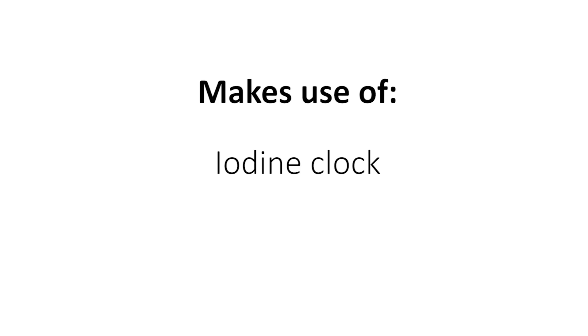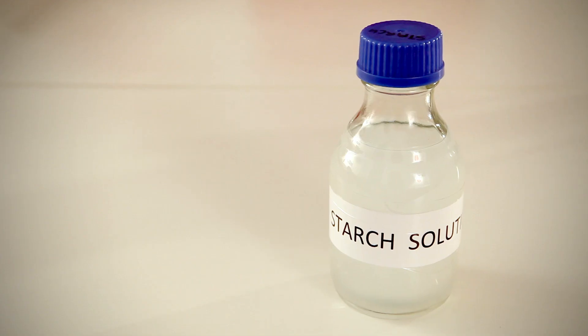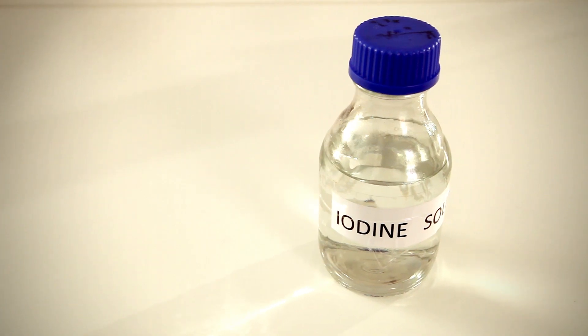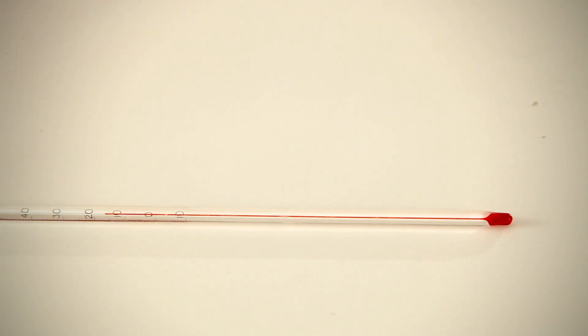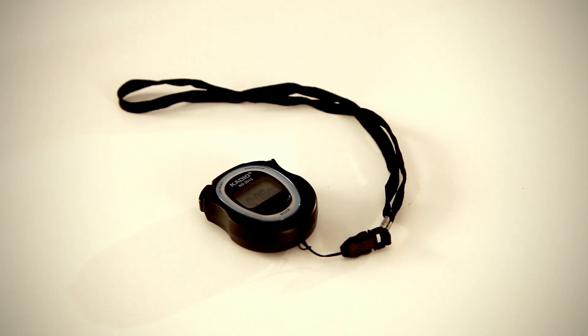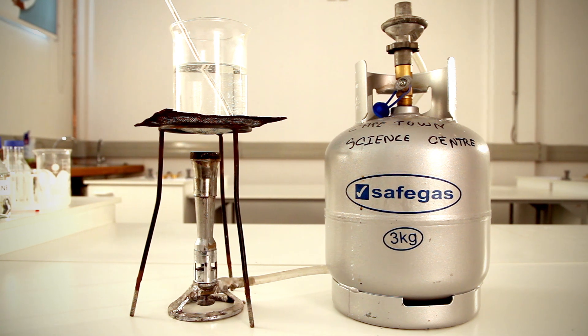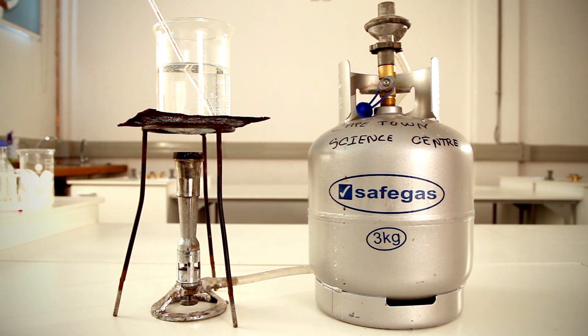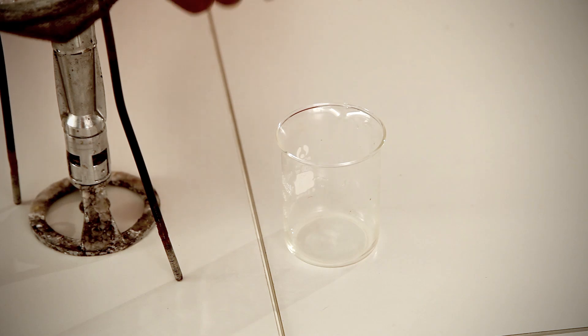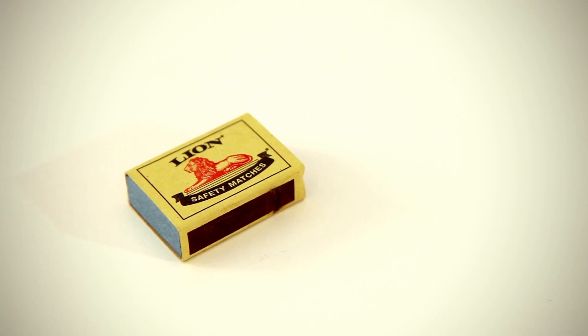The principle used is that of a starch test and makes use of the iodine clock. The items needed for this experiment are starch solution, iodine solution, thermometer, ice in a beaker, stopwatch, Bunsen burner to heat up the water, six test tubes, empty beaker, and a mat.